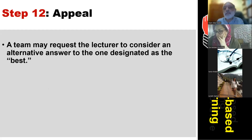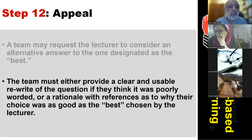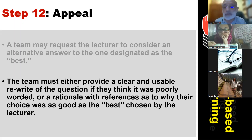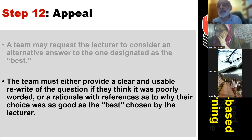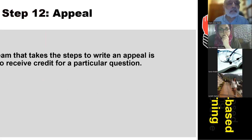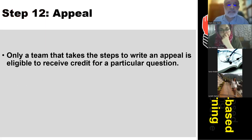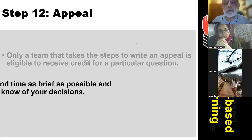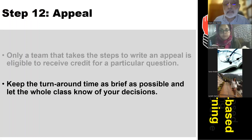For the appeal process, a team may request the lecturer to consider an alternate answer to the one designated as the best. The team must either provide a clear rewrite of the question if they think it was poorly worded, or give their suggested answer with supporting references if they believe the designated best answer is not correct. If students are right, they are given credit. The lecturer should not take too long to come back with the final decision.